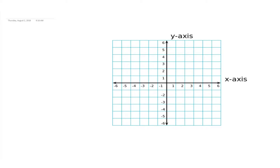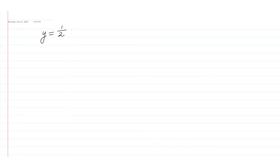How do we tell analytically whether lines are parallel or perpendicular? We can tell by taking a look at the two slopes. So if we had two lines, say y equals one-half x plus four, and the other line was y equals one-half x plus twelve, these lines would be parallel because they have exactly the same slope. Each line has a slope of one-half.